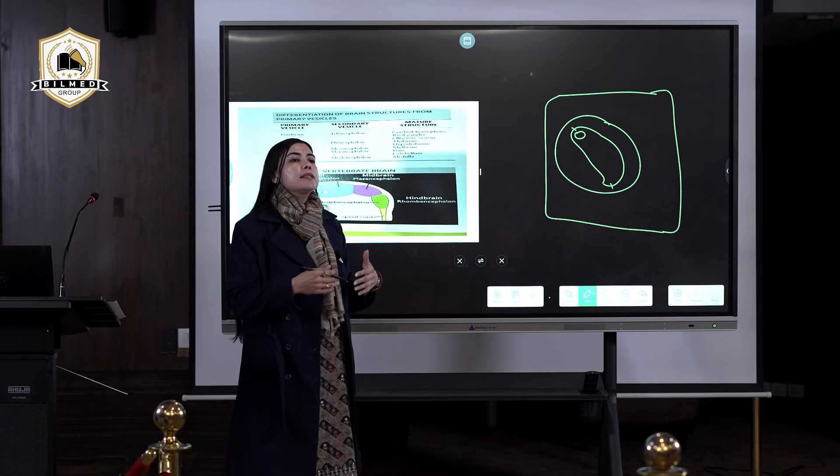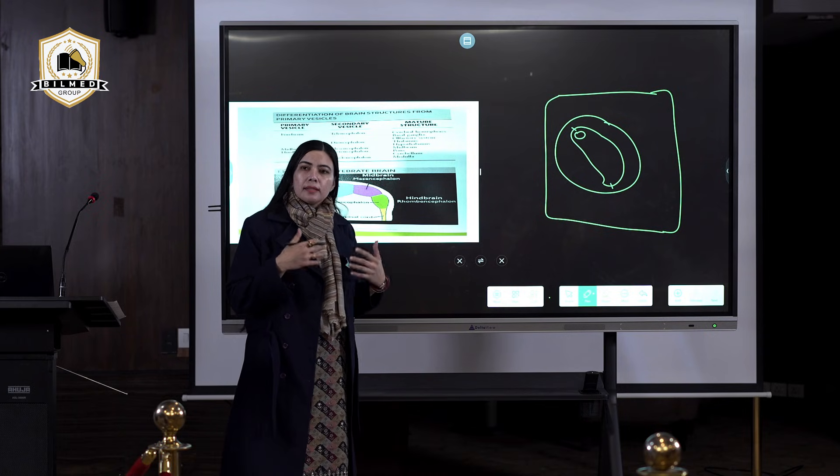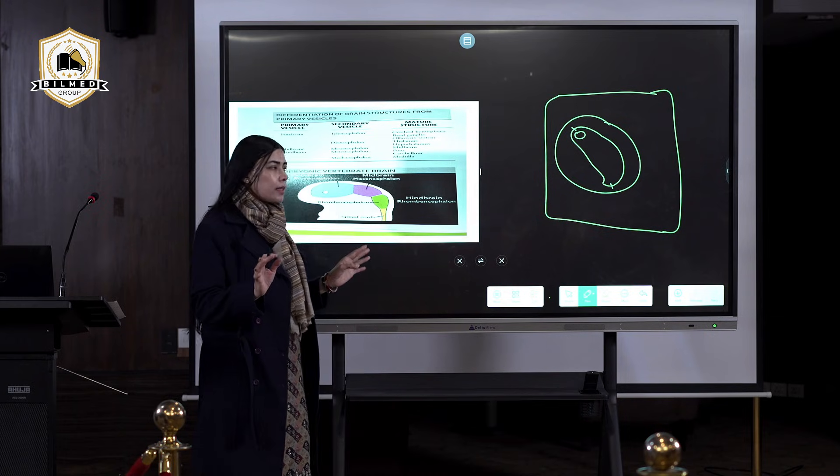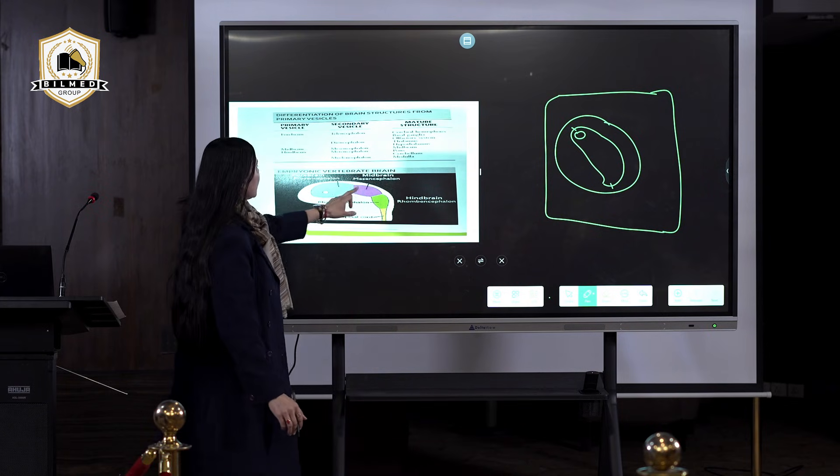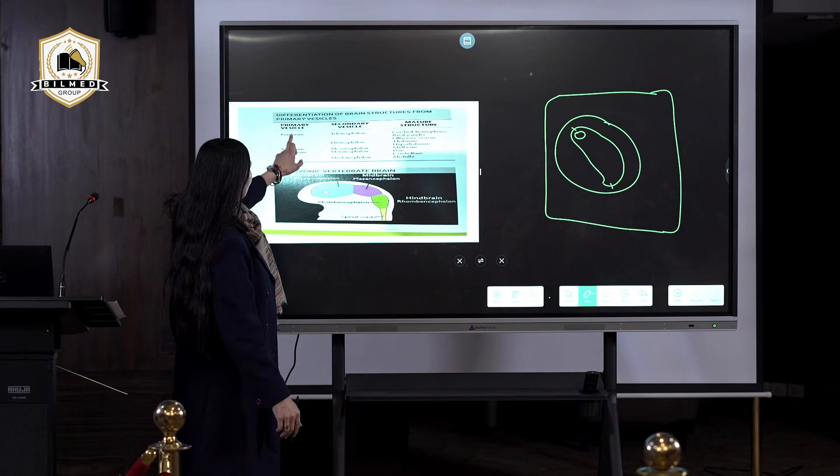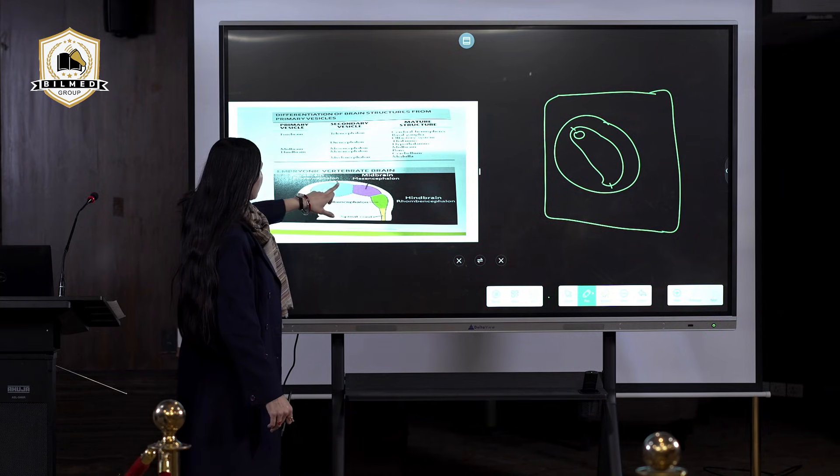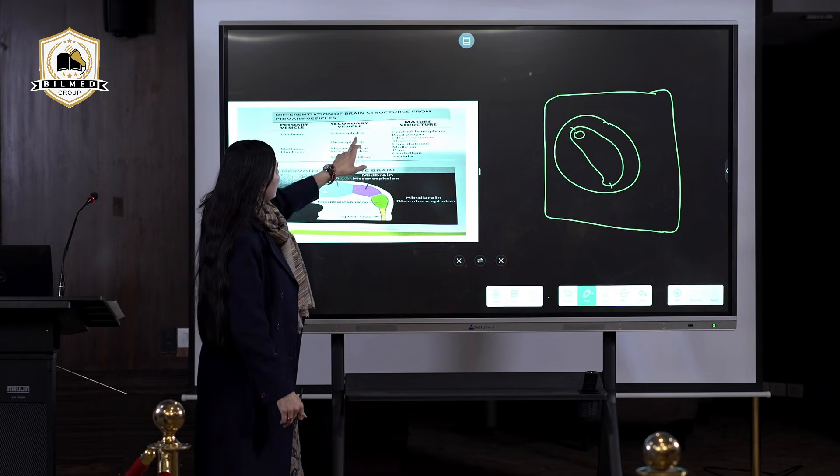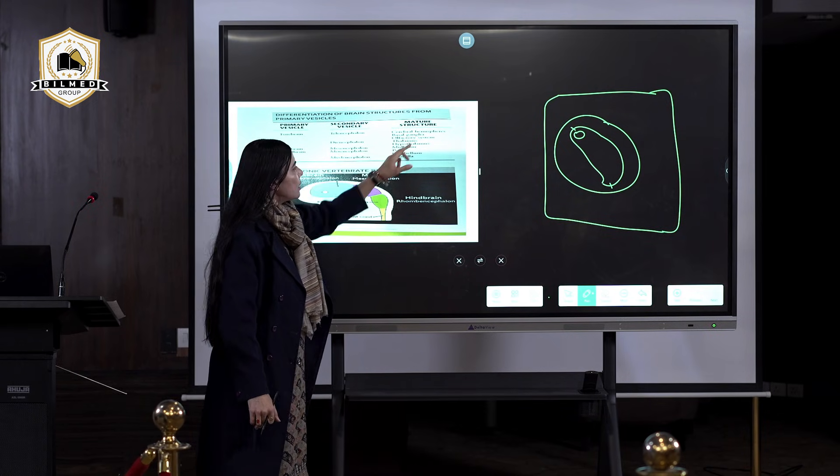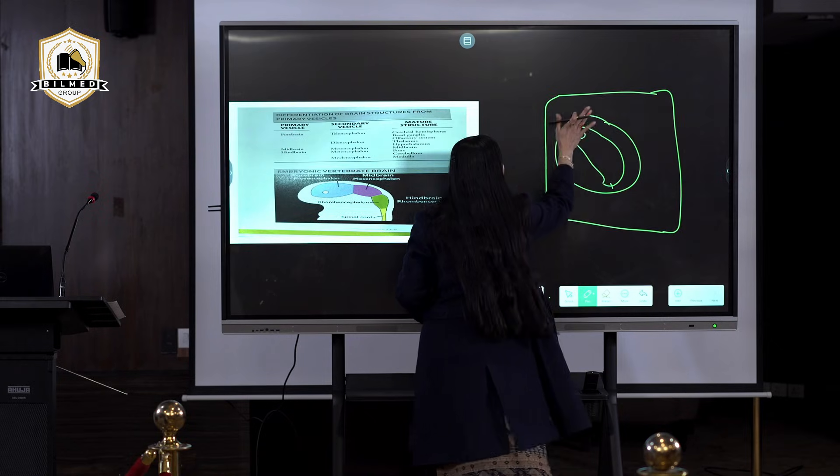If fetal brain development has started, that is not an abnormal thing. What all these are going to form is forebrain. Forebrain is the primary vesicle. It is going to get further divided into telencephalon and diencephalon. Telencephalon will be forming cerebral hemispheres.